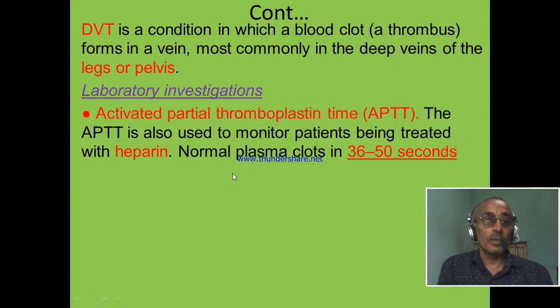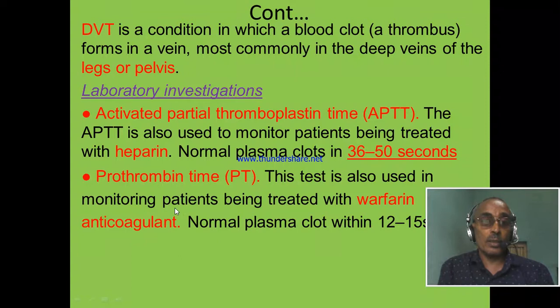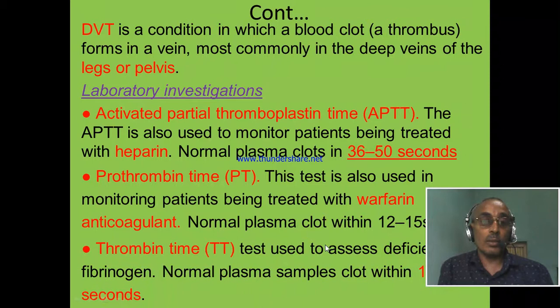Laboratory investigation: To investigate coagulation disorders, specialist laboratory tests are required — like activated partial thromboplastin time, or APTT, which is performed to monitor patients taking heparin treatment, and the normal value is 36 to 50 seconds. The third laboratory investigation is thrombin time, or TT, which is used to assess deficiency of fibrinogen, and the time interval is 12 to 15 seconds.